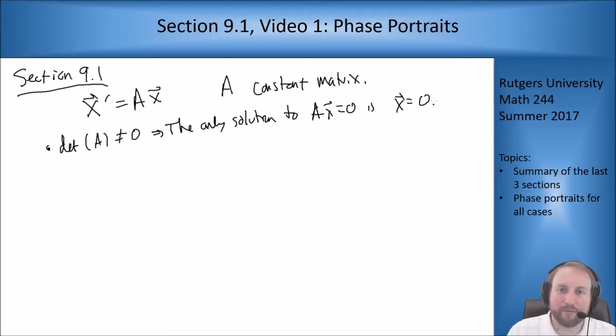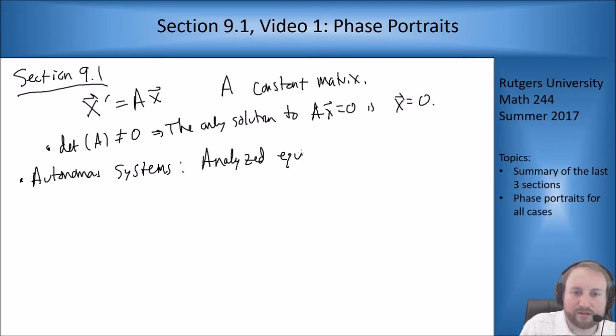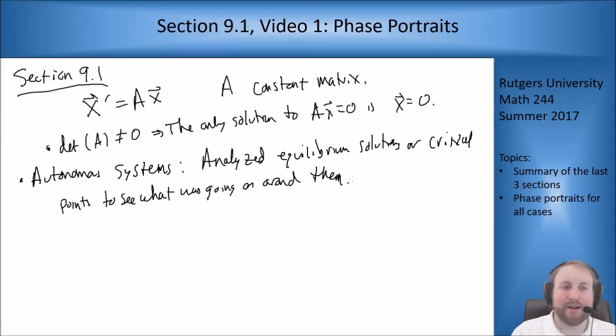We want to combine that fact with the idea of autonomous systems back from chapter 2. For autonomous systems, we analyzed equilibrium solutions, or critical points, to see what was going on around them. We set x prime to be 0 and saw what happened. In this case, x prime equals 0 just means that Ax equals 0, but we said above this means that x equals 0. So you only have one critical point and it's at the origin.